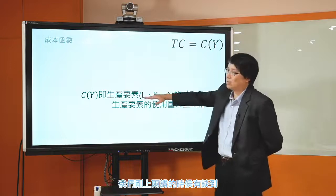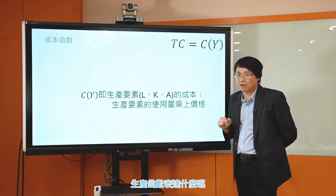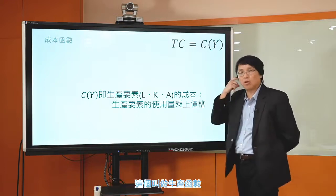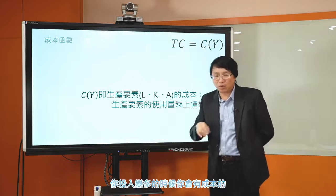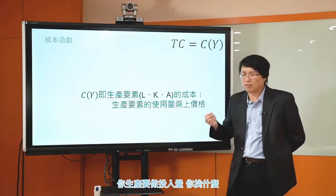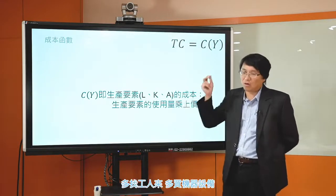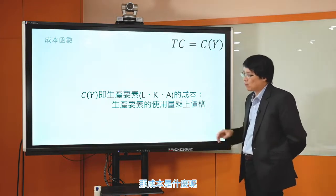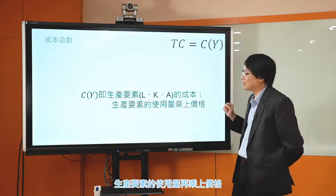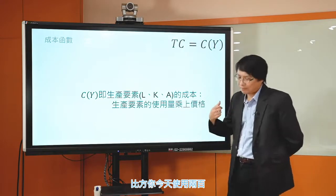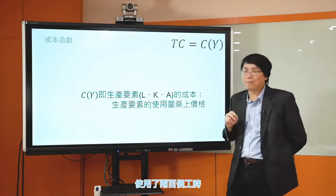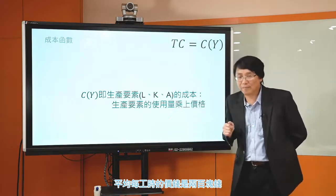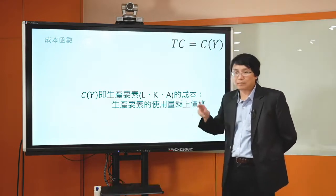成本函数就是试图把成本跟产量的关系用数学式来表达它。那什么是你的成本呢？你的成本就是你所使用的生产要素的成本。比如像你今天使用了200个工时，平均每工时的价钱是200块钱，那你使用劳动投入的成本就是200乘以200。